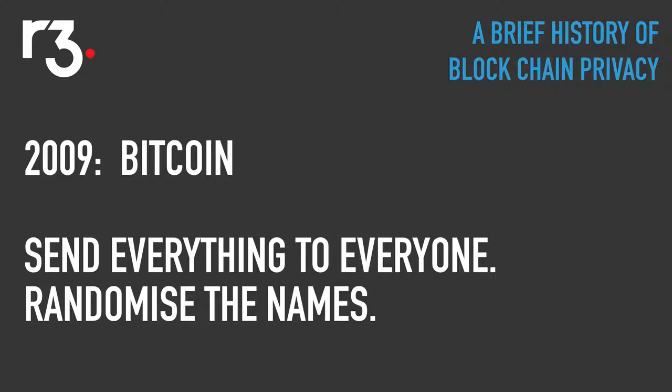This whole story starts in 2009 with the release of Bitcoin by Satoshi Nakamoto. Bitcoin has a very simple privacy model. It starts by sending every financial transaction on the system to everyone, and it hides details by randomizing the names of the participants. Names are replaced with randomly chosen, constantly changing public keys — just big random numbers — so you can't link them together. This is a good enough start and Bitcoin gains adoption.